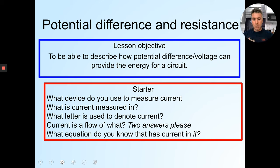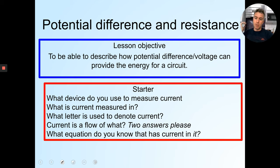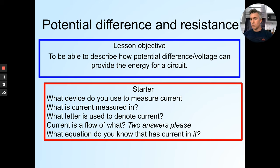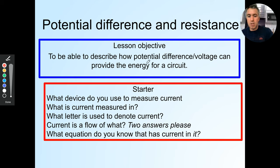Current is a flow of — two answers please. Current is a flow of charge, so it can be charged particles and ions or electrons, or you could just say electrons. More specifically, it's normally a flow of electrons. What equation do you know that has current in it? The equation is Q = It.